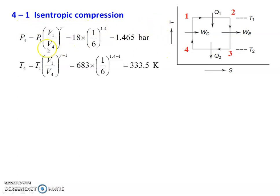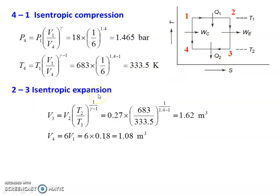For isentropic compression process 4 to 1: P4 = P1 × (V1/V4)^gamma = 18 × (1/6)^1.4 = 1.465 bar. T4 = T3 = T1 × (V1/V4)^(gamma−1) = 683 × (1/6)^0.4 = 333.5 Kelvin. For isentropic expansion 2 to 3: V3 = V2 × (T2/T3)^(1/(gamma−1)) = 0.27 × (683/333.5)^(1/0.4) = 1.62 meter cube.